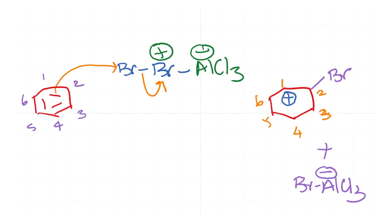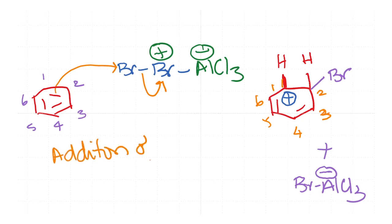Let me number these carbons 1 through 6. The bond between C1 and C2 is broken and a new bond between C2 and Br is formed. The byproduct is Br−AlCl3 with a negative charge. So the bond between C2 and Br is forming while the bond between C1 and C2 breaks, resulting in a full positive charge on carbon 1. The other double bonds remain. This hydrogen at C2 also remains. This is the addition step — the addition of E+ (the electrophile).